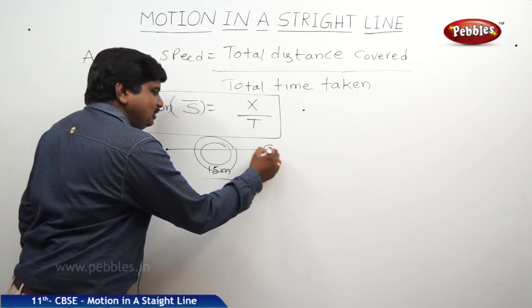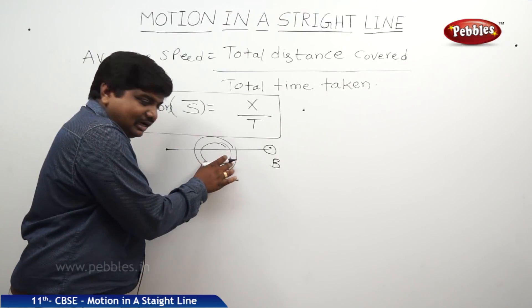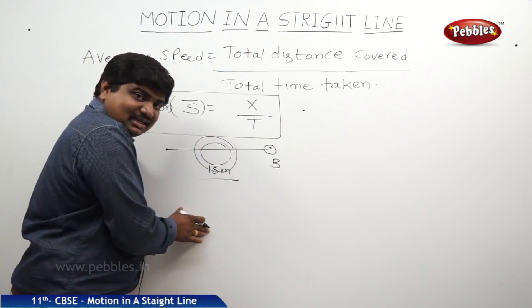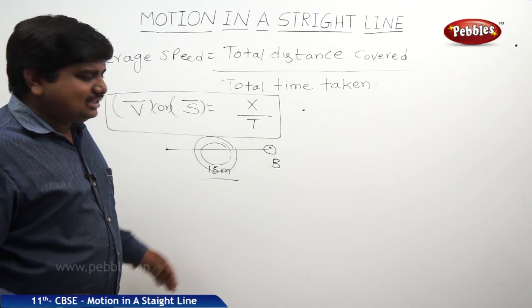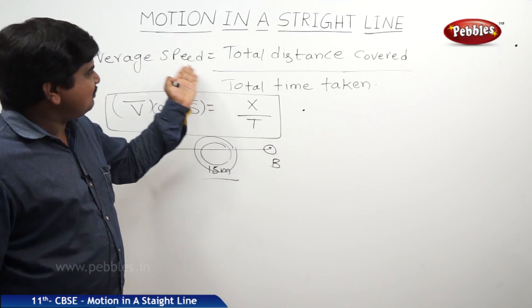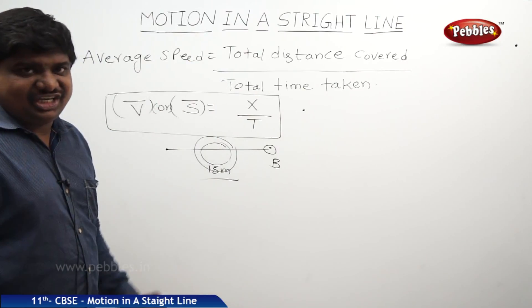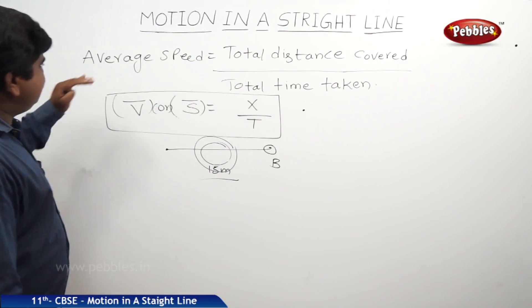Means for an observer who is waiting for the bus or waiting for this train, at the destination point, for him it is late only. So like that it is crossed over the time. So that's why average speed value may change. So this is average speed.